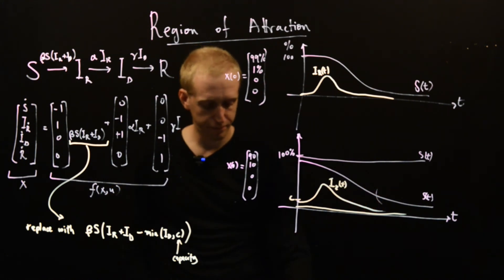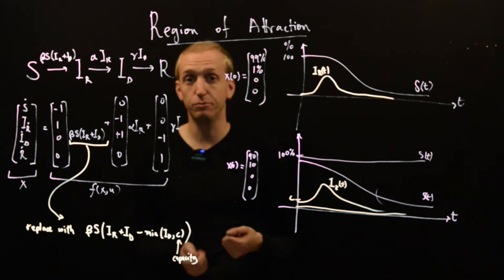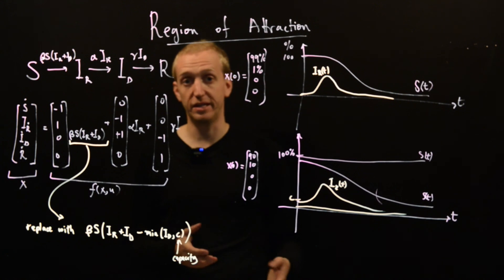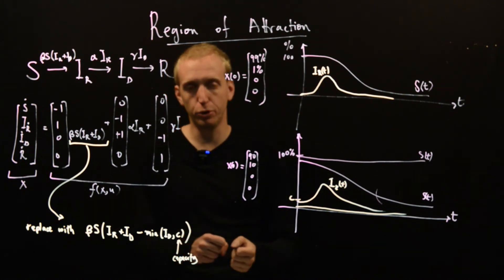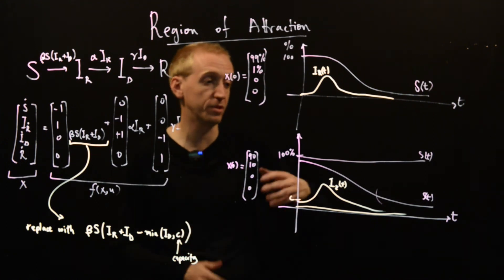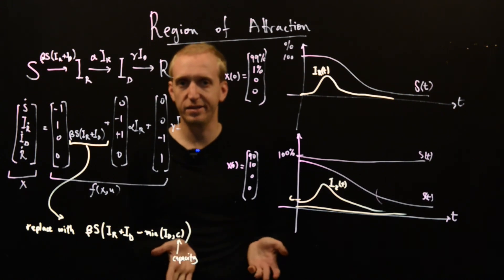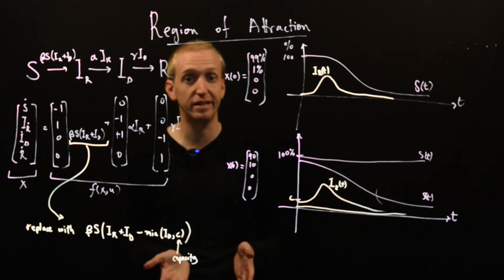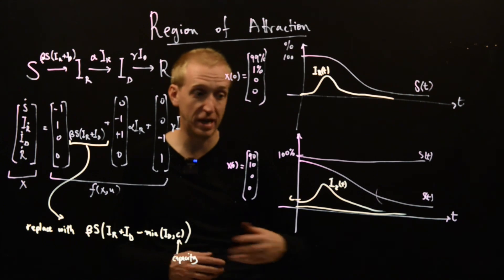And actually this is very common. In this example we've been looking at disease spread. But given any system typically whatever actuators you have will be subject to some constraints. Like motors are not infinitely powerful, this kind of thing. So there will always be this saturation going on. And so then if you have a process that's inherently unstable, if you get pushed far enough away your actuators get overwhelmed and you see the full unstable behavior happen anyway.